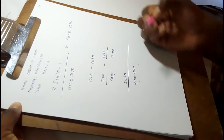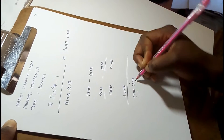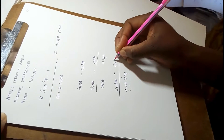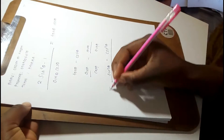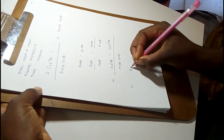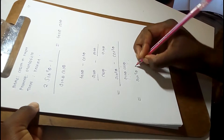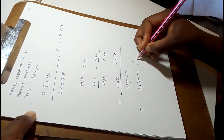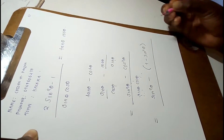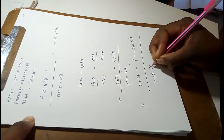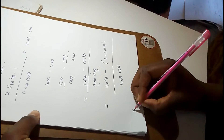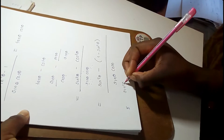Then for the second term: sine theta into sine theta cos theta — the sine theta cancels — giving cos theta, and multiplying by cos theta gives minus cos squared theta. Using the identity 1 minus cos squared theta equals sine squared theta, I'll close the brackets and divide by sine theta cos theta. This simplifies to sine squared theta in the numerator.